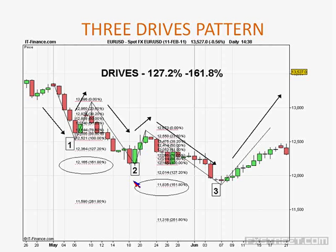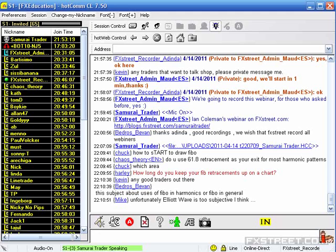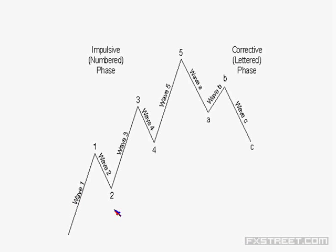I use Fibonacci all the way down into very short time frames — it's just another added tool. Wave 1 is 100%, wave 2 down towards 50 or 61.8%, wave 3 is 161.8% of wave 1, wave 3 to 4 is normally 23.6 to 38.2 of wave 2 to 3. Wave 5 should be between 261.8% and 423.6%, with 261.8% being the most common, but sometimes they are short.